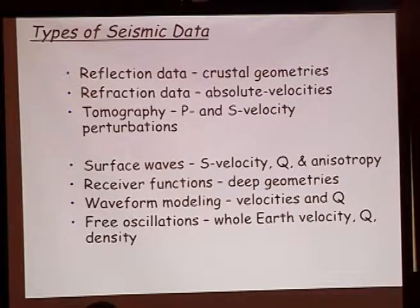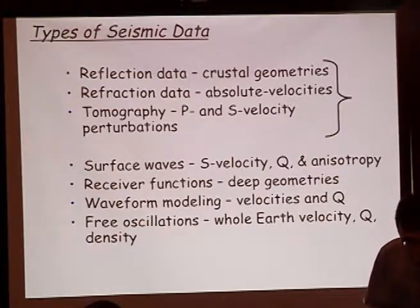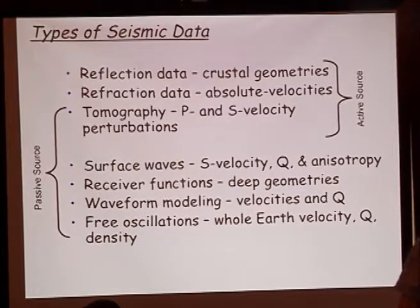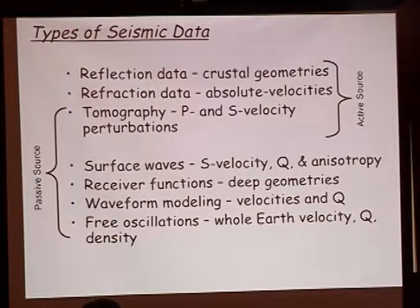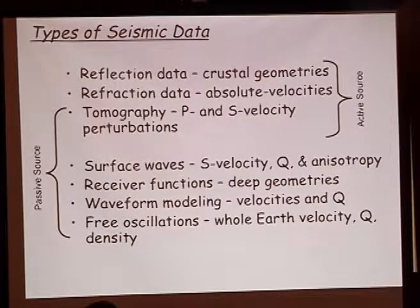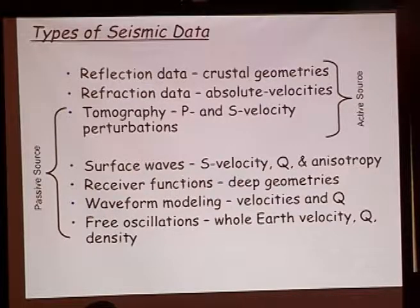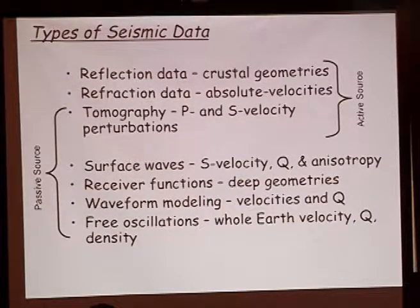I want to start with a basic overview of different types of seismic data. One of the principal ways that seismologists divide up their discipline is between active source and passive source. Active source uses man-made sources — you've heard about reflection seismology and refraction seismology. With enough sources and receivers, you can do tomography with it. Passive seismology, or natural source seismology, utilizes earthquakes as sources. Surface waves are used for tomography, receiver functions, waveform modeling, and at bigger sources, free oscillations can be used to study the whole Earth.